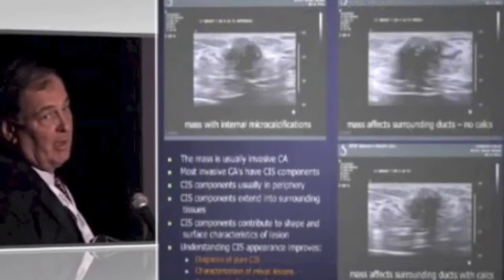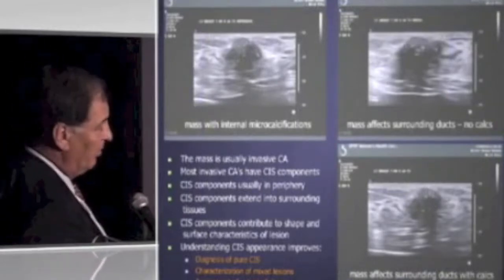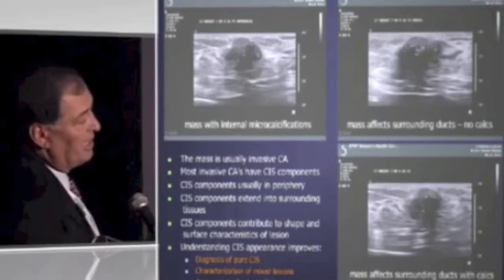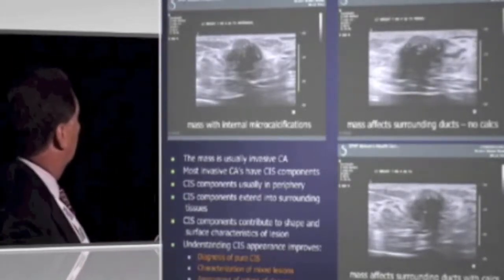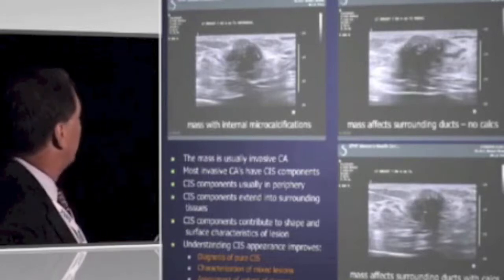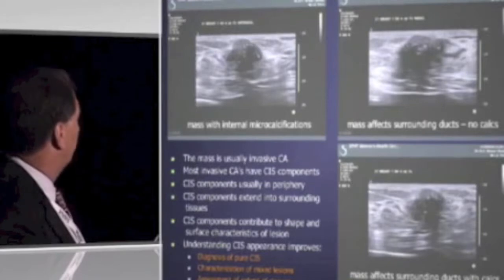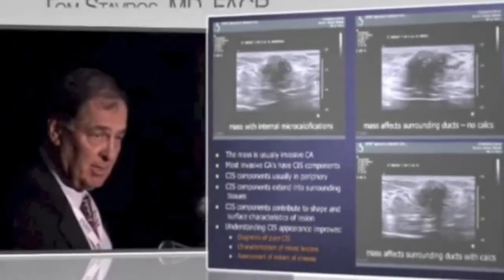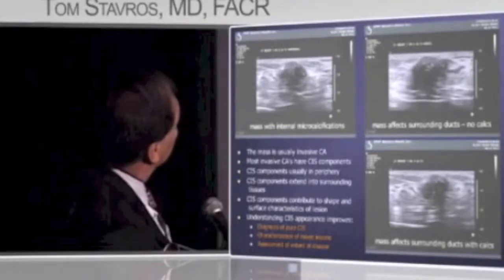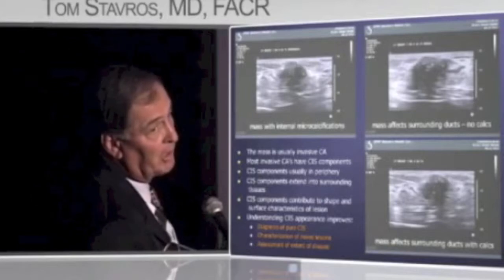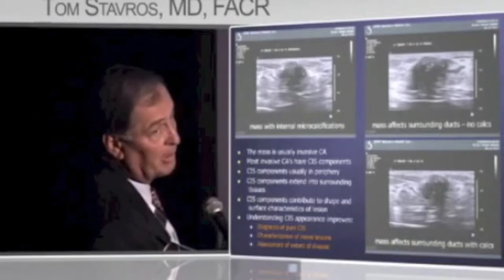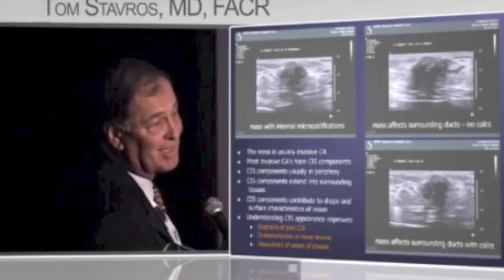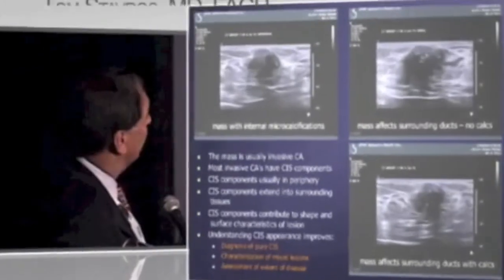We often ultrasound calcifications because the mass is often invasive, and we can upgrade a lesion from DCIS to invasive by biopsying the mass under ultrasound guidance. The carcinoma in situ components extend into the surrounding tissues for variable distances, and they also create the surface characteristics of the lesion in many cases, giving rise to its surface characteristics and shapes. They help you characterize pure DCIS, mixed invasive and DCIS lesions, and assessment of extent of disease. In the ACR BI-RADS lexicon these are microcalcifications outside of mass, but you can go farther: these are outside of mass and inside of ducts — in the center of ducts — which is classical grade 3 carcinoma in situ.